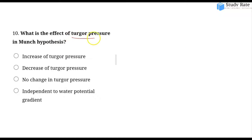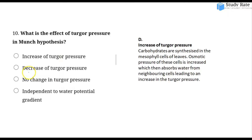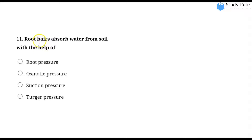The tenth question: What is the effect of turgor pressure in the Munch hypothesis? Turgor pressure mainly increases because carbohydrates are made in mesophilic cells. Osmotic pressure increases, water is absorbed from neighboring cells, and this causes turgor pressure to increase.